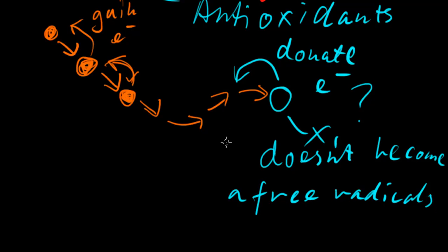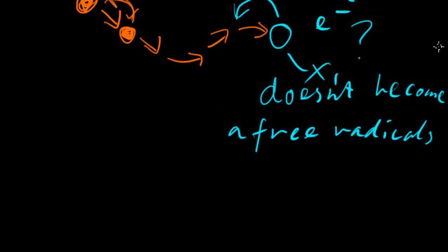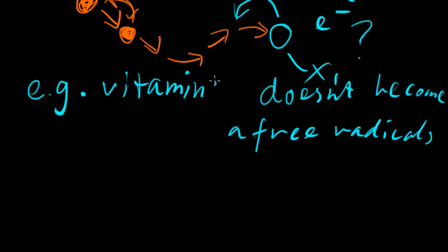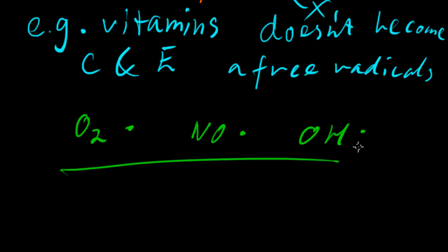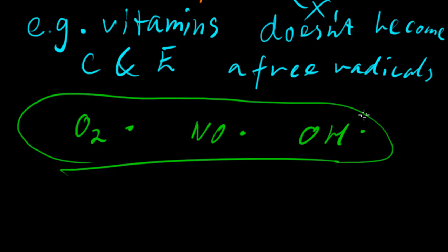And it ultimately saves us from that harm. Some examples are vitamins C and E. Now, if this is interesting to you, maybe check out some of these. This dot here just means it's a free radical. These are biologically important: this is a hydroxyl radical, this is a nitric oxide, and that's a superoxide anion. These are very important biologically speaking. We'll probably encounter these later on in further modules. So if you're interested now, go ahead and check some of these out.